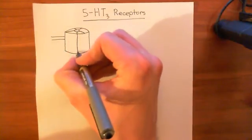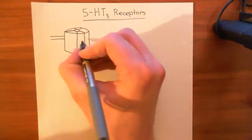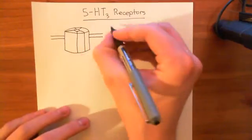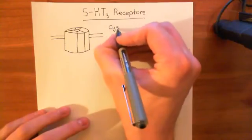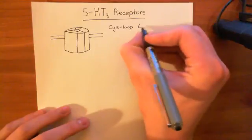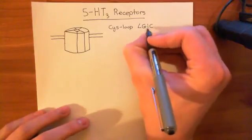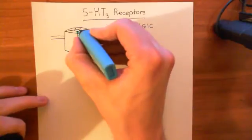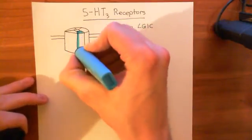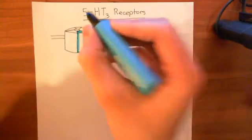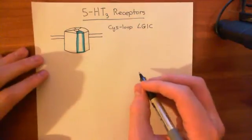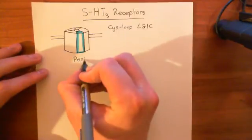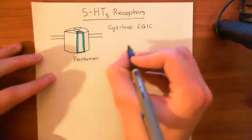The channel is made up of five proteins stuck together — so one, two, three, four, five — and this is true of all cis-loop ligand-gated ion channels. 5-HT3 receptors are an example of a cis-loop ligand-gated ion channel, often abbreviated to LGIC. Now let's take one of these subunits that makes up this pentameric structure out and have a closer look at its structure — specifically, its membrane-spanning topology.